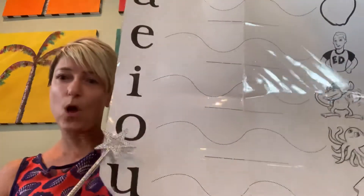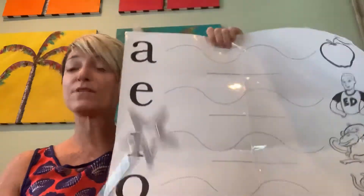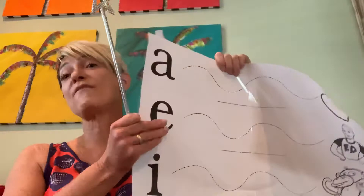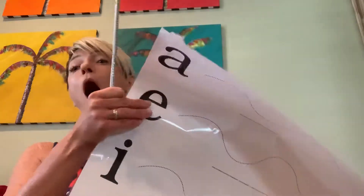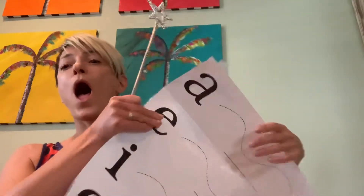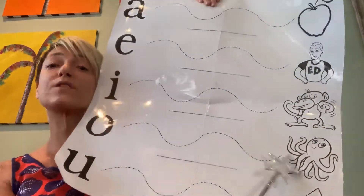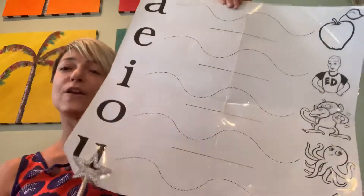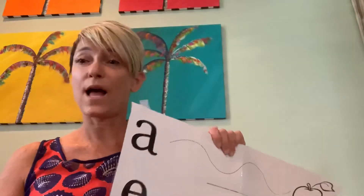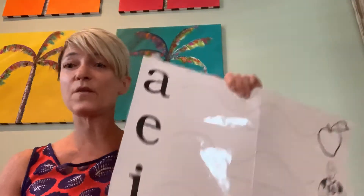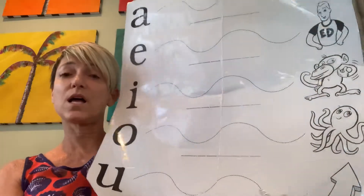And then O and U can get confusing. O, you have to open your mouth very wide or very tall. Ah. Octopus. And U, just open your mouth halfway, just a little bit. Uh. Up.